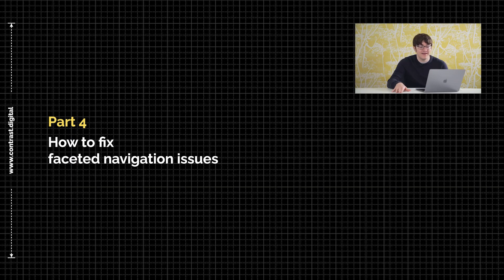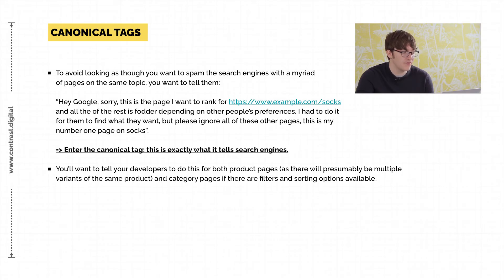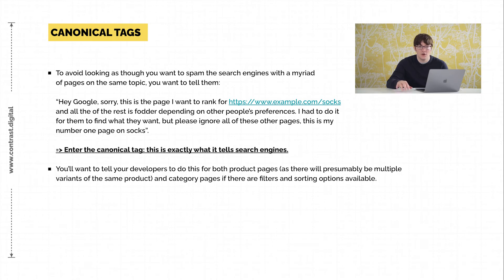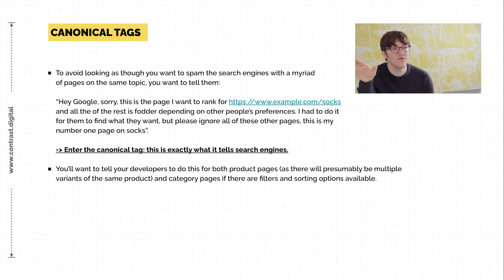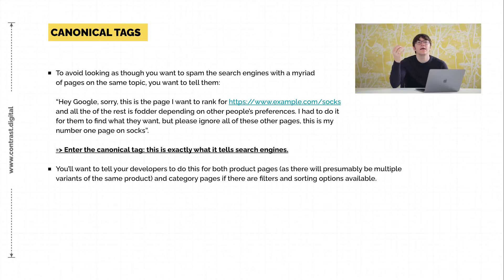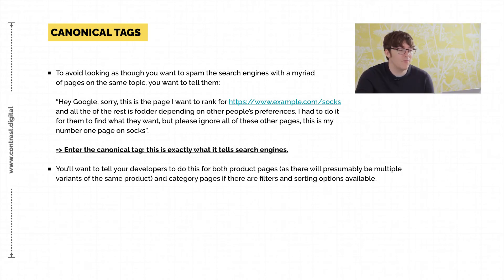Now we're coming on to how we actually fix this. The first solution is a canonical tag. What we can do is put on the duplicate pages a canonical URL — a bit of code that points back to the parent page, in this case the socks category page — to say: this is the page I want you to care about; these others are ultimately duplicates that exist for user experience but can be ignored. You'll need to work with your developers to implement this across your site, though if you're running a modern e-commerce platform they most likely will have this built in already.